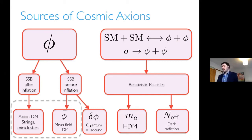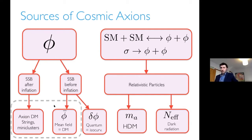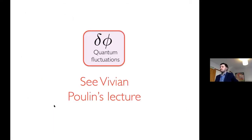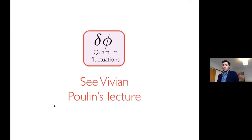Today I'm just going to be discussing the condensate and mean field evolution. In this half hour we will discuss the mean field evolution of the axion. For the quantum fluctuations case, some of this will be covered in Vivian Poulin's lecture when iso-curvature is discussed.